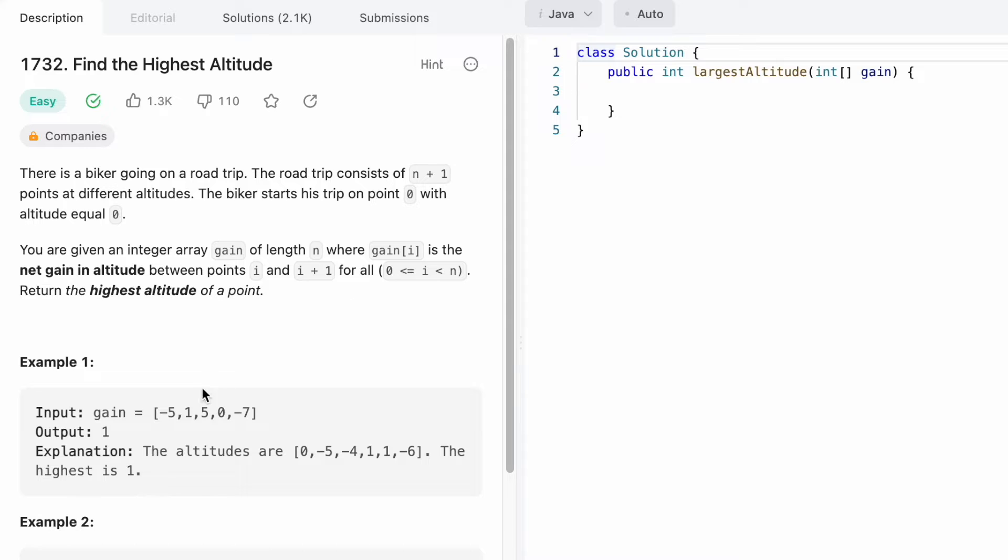There are n plus one points and n elements inside the array because we start from altitude zero, which is not part of the gain array. Our task is to return the highest altitude of a point.